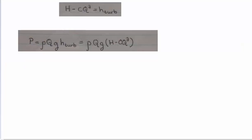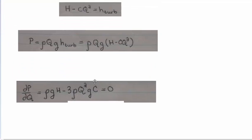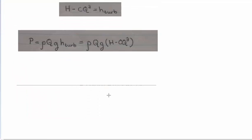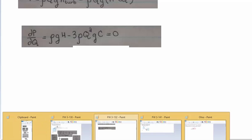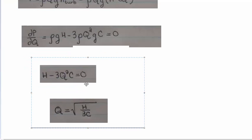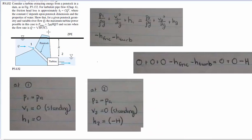To make the differentiation easier, we distribute, then take the derivative with respect to Q, set it equal to zero, and solve for critical points. The rest is algebra, and that gives exactly what the problem asked us to prove.